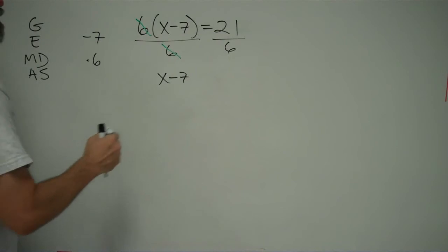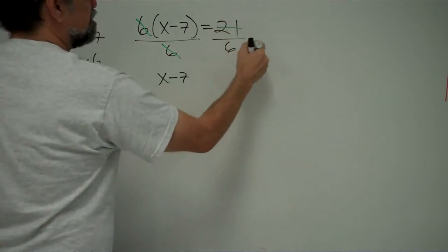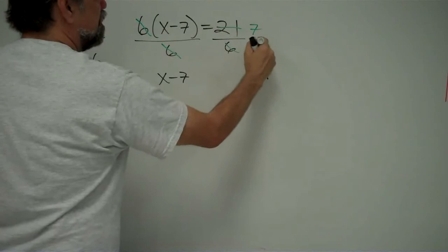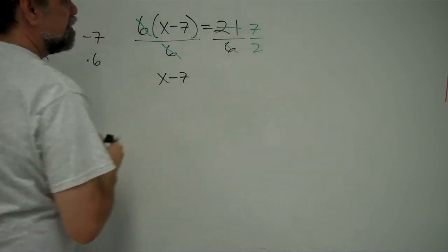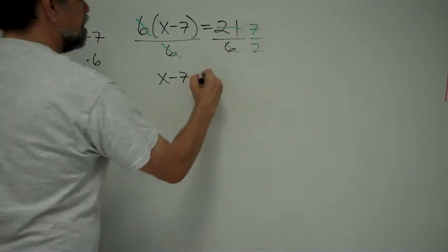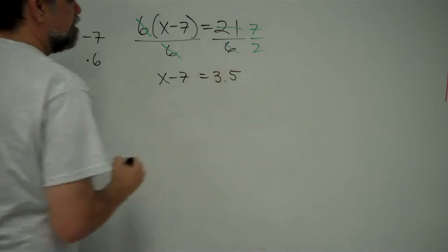And on the right side of our equation, we have 21 divided by 6. And let's see, 21 divided by 6, this would just be, they're both multiples of 3. So, I could call this 7 over 2. And 7 over 2, I recognize that to be 3.5.